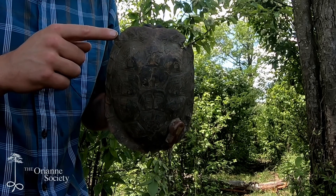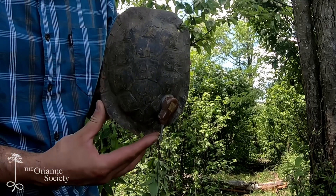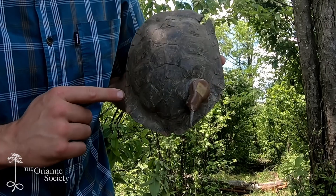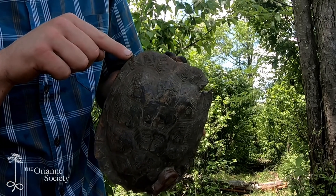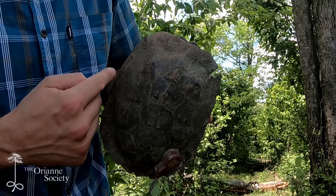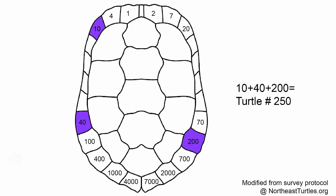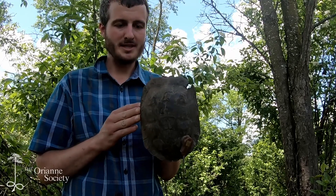But I also have an interest in knowing specifically which turtle is which. So there's a numbering system with the notches that allows us to give each turtle a unique ID. Here we have notch number 40, 200, and 10. I know that just because of the location of each of the scutes or plates that have been notched. So 10 plus 40 plus 200 is 250, and as long as no other turtle in this region is marked on those exact same notches, then this turtle has a unique ID and I'll always know specifically which turtle this is.